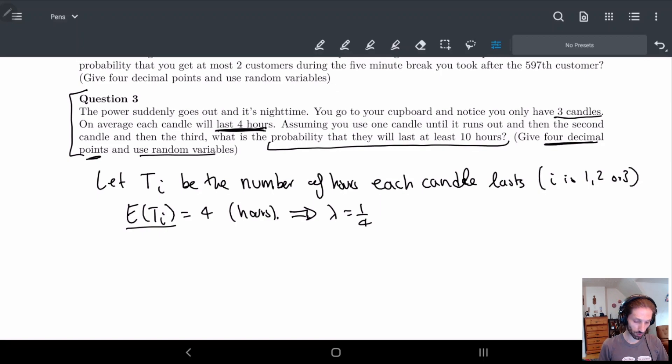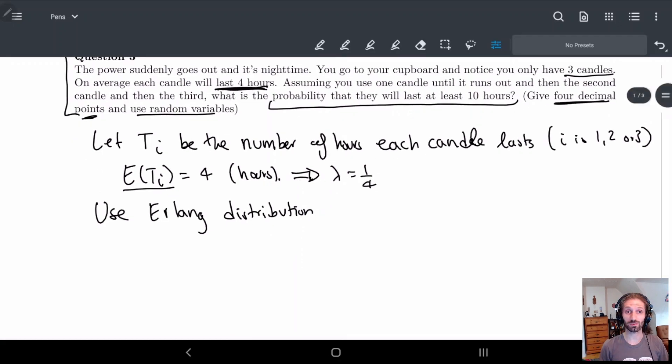And why am I looking for lambda? Well because I'm going to use Erlang distribution. This should have been the last video from week eight and so that's why you need to make sure you have all the information so that you can properly handle everything. Use Erlang distribution on g3 which is just t1 plus t2 plus t3. That's how we know this.